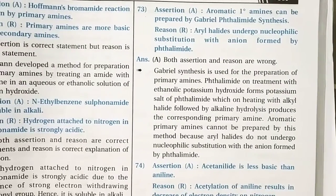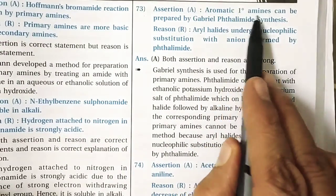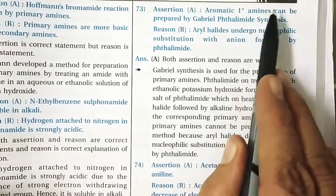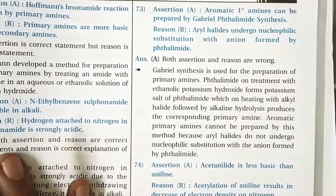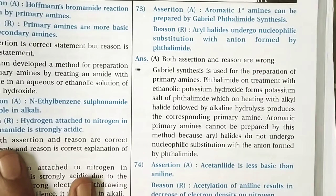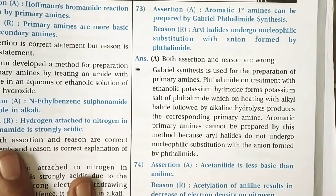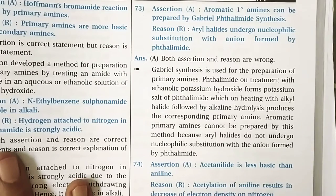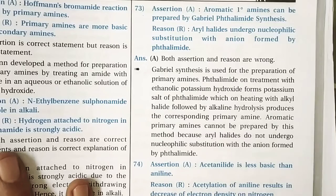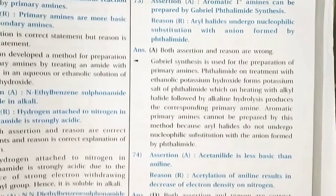Question 73: The assertion that aromatic primary amines can be prepared by Gabriel phthalimide synthesis is entirely wrong. Aromatic primary amines cannot be prepared by Gabriel phthalimide synthesis. The reason is also wrong — the correct reason is that aryl halides do not undergo nucleophilic substitution with the anion formed by phthalimide.